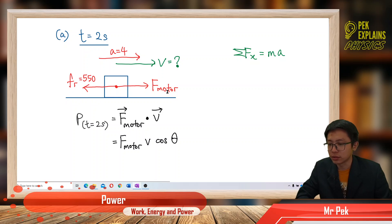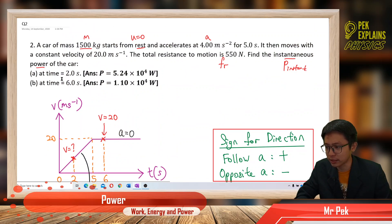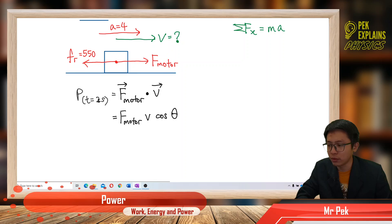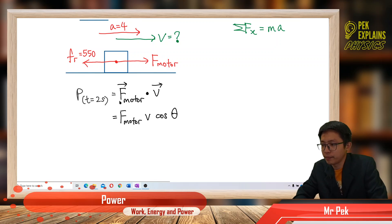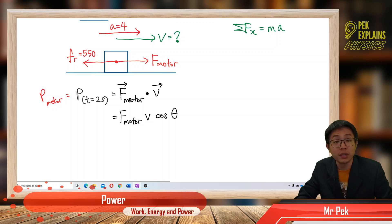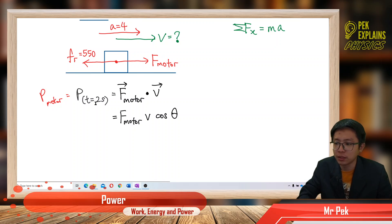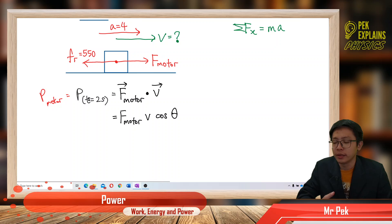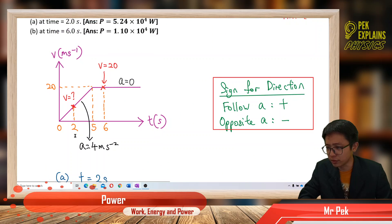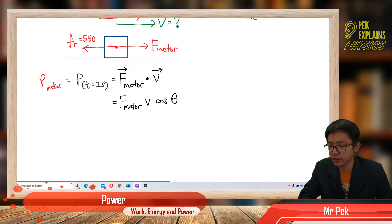To find instantaneous power, the formula is power equal to F dot V. The dot product uses cos theta. Since we want the power of the car — that is the power of the motor — we use force of the motor dot velocity. Instantaneous power is the power at that specific time only. The power changes according to velocity, and velocity changes with time during acceleration. So different times have different velocities and therefore different power.